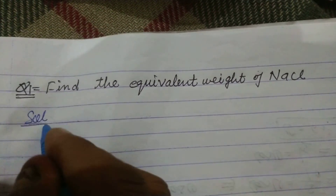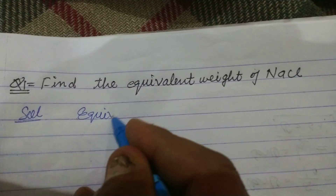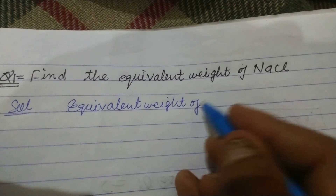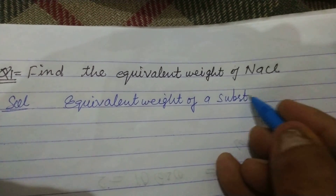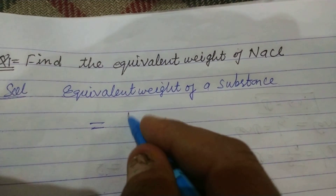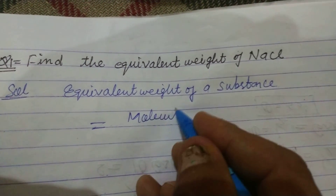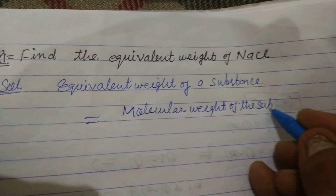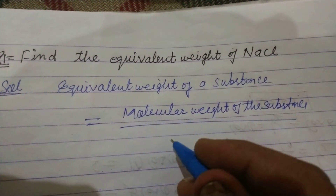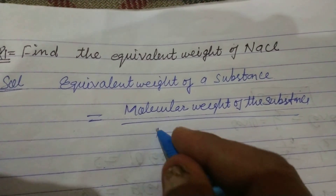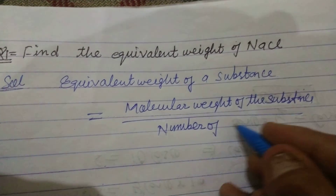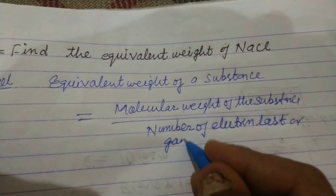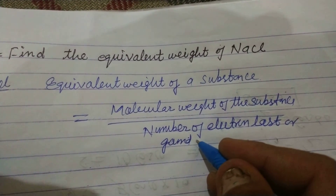The formula of equivalent weight: equivalent weight of a substance is equal to molecular weight of the substance over the number of electrons lost or gained by one molecule.